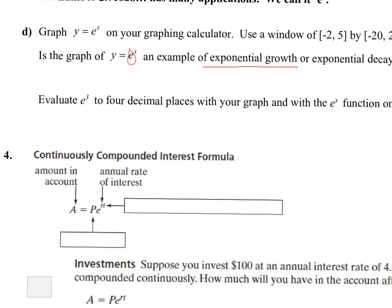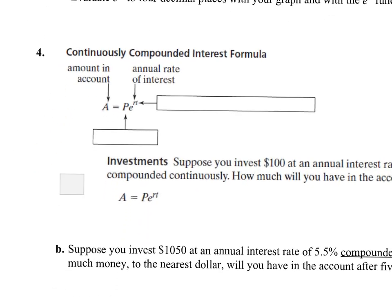But the biggest thing that we use for e is compound interest. So to calculate compound interest when it's continuously compounded, not compounded every year, every month, every hour, continuously, is this formula. So the P stands for the principal or the initial amount. The R stands for the interest, and the T stands for time. And the A is the amount that is going to end up in the account.